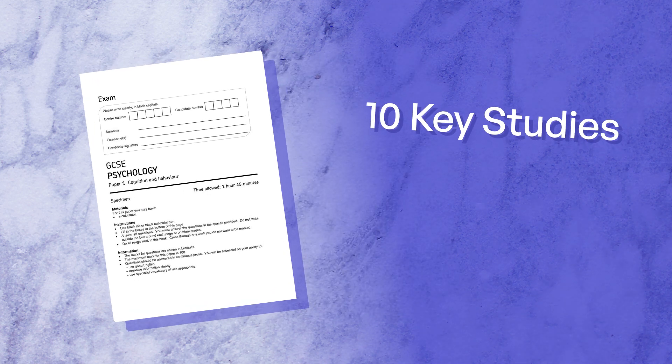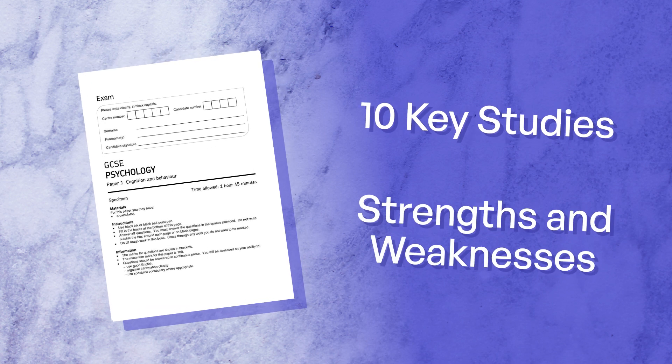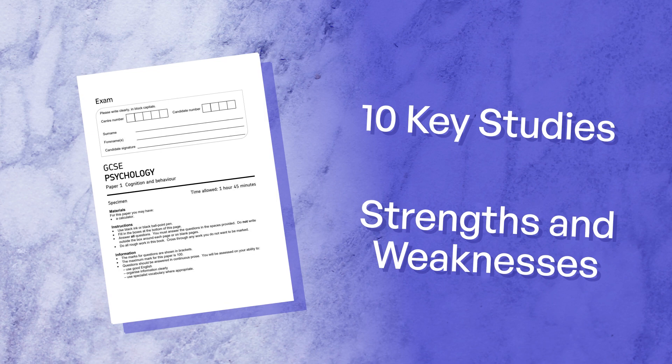For paper one in your GCSE you will learn 10 key studies. You need to know about these studies in detail, but you also need to know their strengths and weaknesses. In your GCSE exams you may also be given information about a made-up study invented just for the exam, and you have to say what the strengths and weaknesses are of that study. You may also be required to suggest improvements for the study, but we'll talk about that in another video.